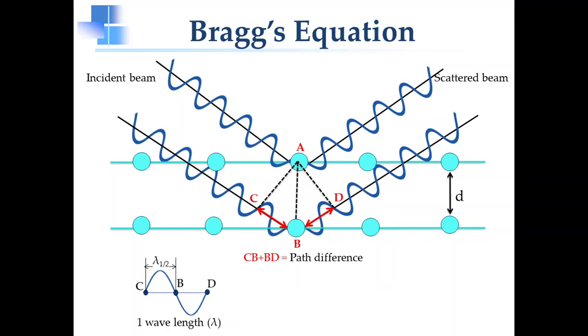Similarly, if the path difference is equal to two wavelengths, so in that case also both the rays will be in the same phase. As one wavelength distance will be traveled by the incident ray and one wavelength distance will be traveled by the scattered ray.